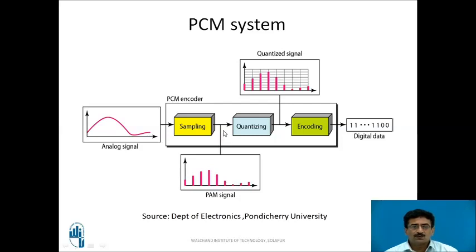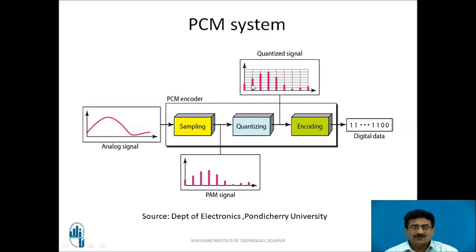The output of the sampler is given to the quantizer. The function of the quantizer is to approximate the real-time sample values. For example, if the sample value is 2.2 volts, it lies between 2 volts and 3 volts. Since it is closer to 2, the quantized value is taken as 2 volts.